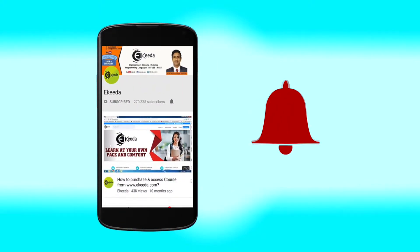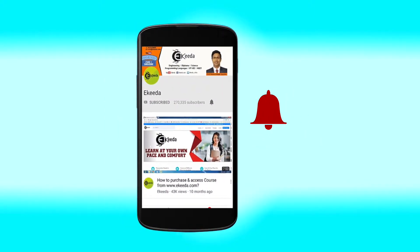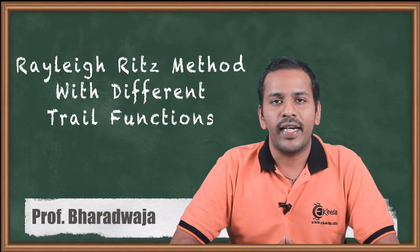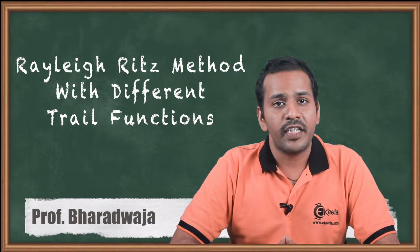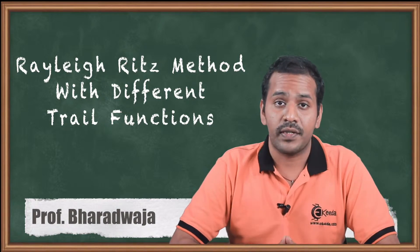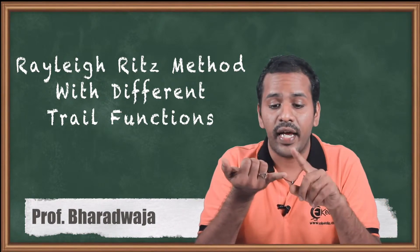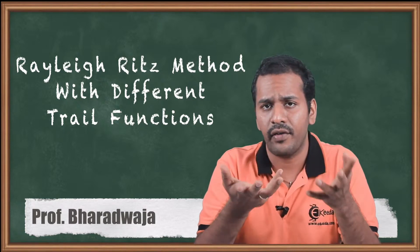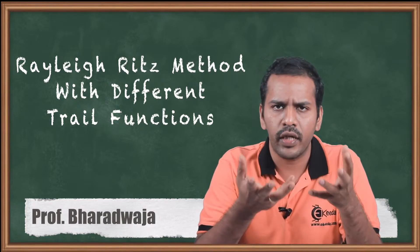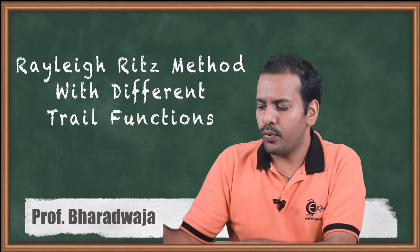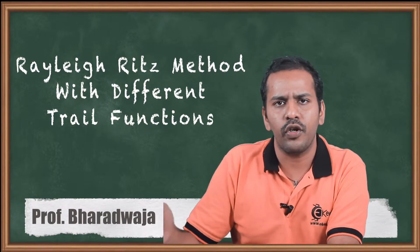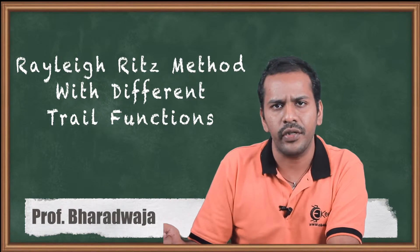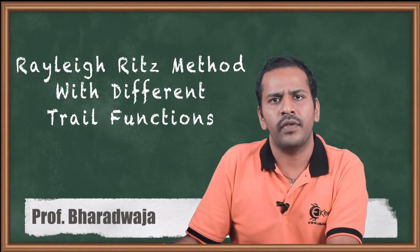Welcome to Fine Entertainment Methods. Let us learn the Rayleigh-Ritz method with different trial functions. What if I take a trial function as a constant, linear, quadratic, or cubic? What are the different trial functions we can use in the Rayleigh-Ritz method, and what solutions will we get? What is the minimum order required for the trial function? Let us solve it right now.